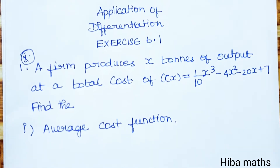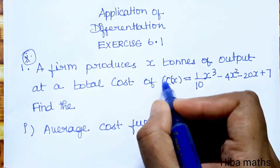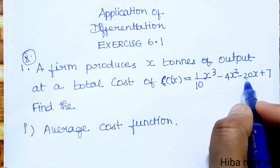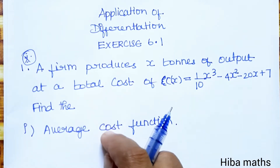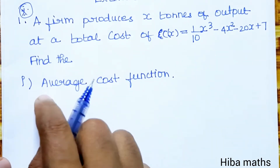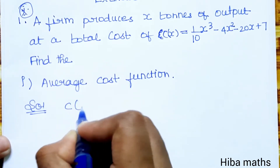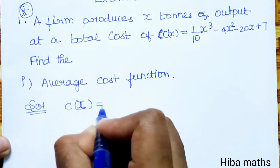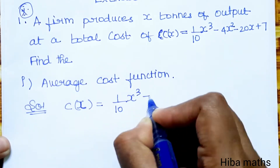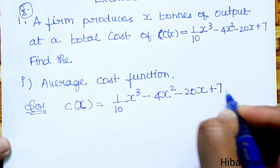A farm produces x tons of output at a total cost of C(x) = 1/10 x³ minus 4x² minus 20x plus 7. Find the average cost function. Solution: C(x) total cost = 1/10 x³ minus 4x² minus 20x plus 7.